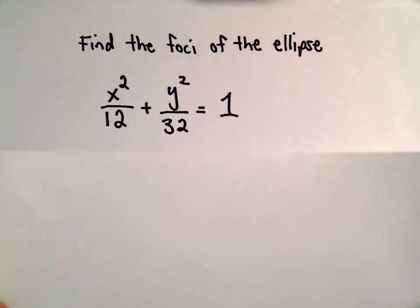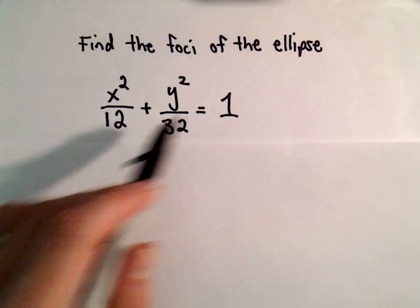In this example, we're going to find the foci of the ellipse x²/12 + y²/32 = 1.